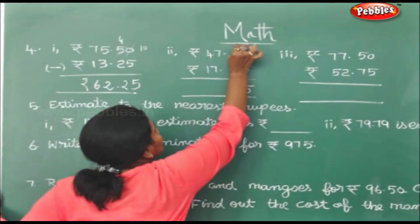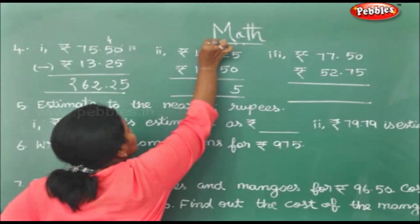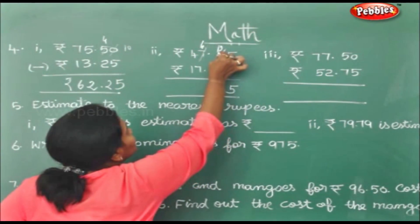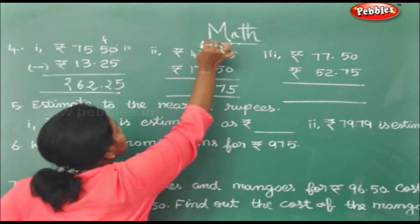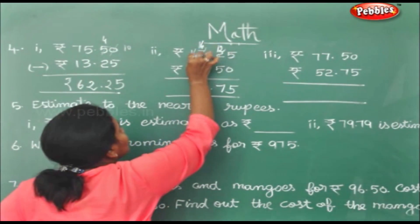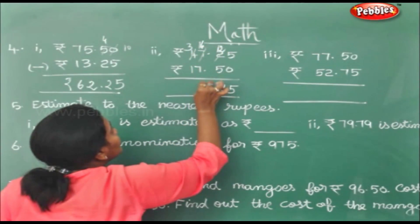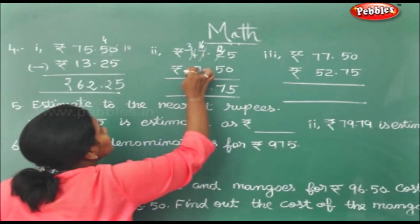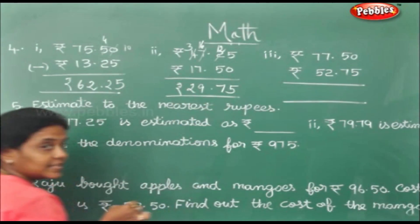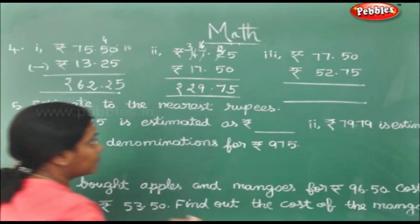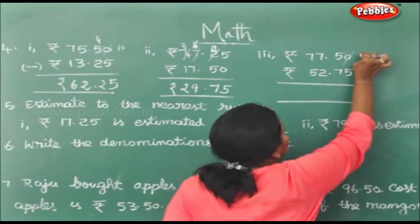Here, 5 — you cannot subtract — so this becomes 12 and this becomes 6. So 12 minus 5 is 7. This becomes 16 and this becomes 3, so 16 minus 7 is 9. 3 minus 1 is 2. So this is rupees 29 and 75 paise.